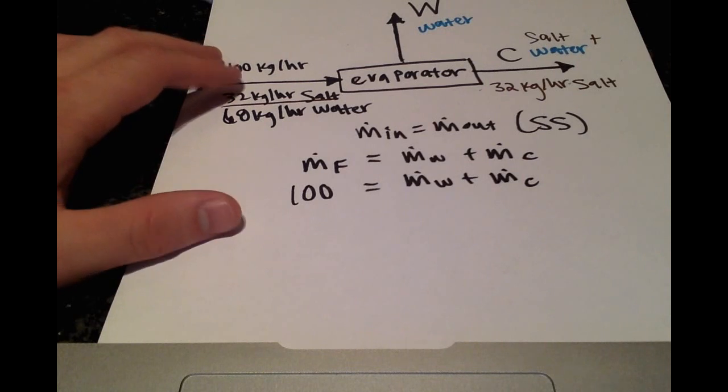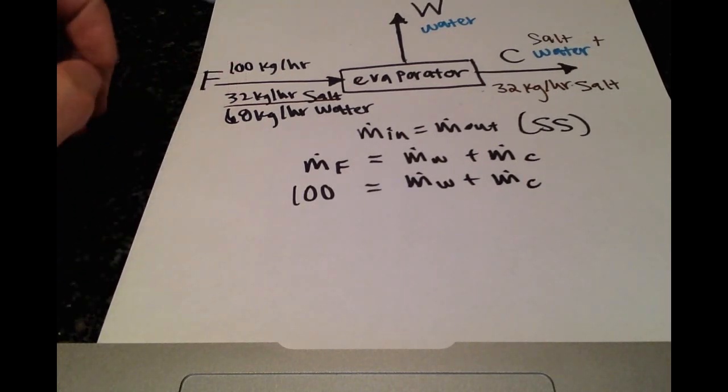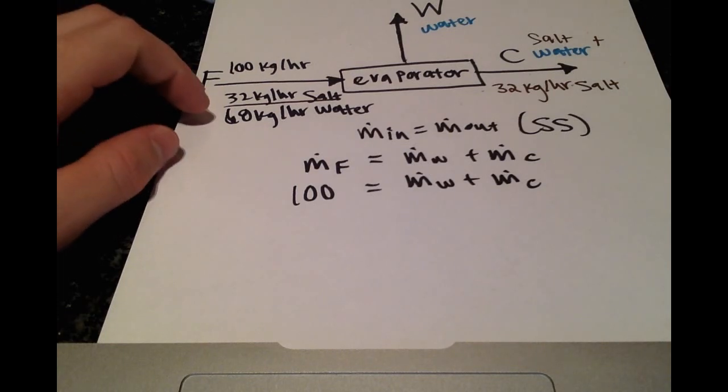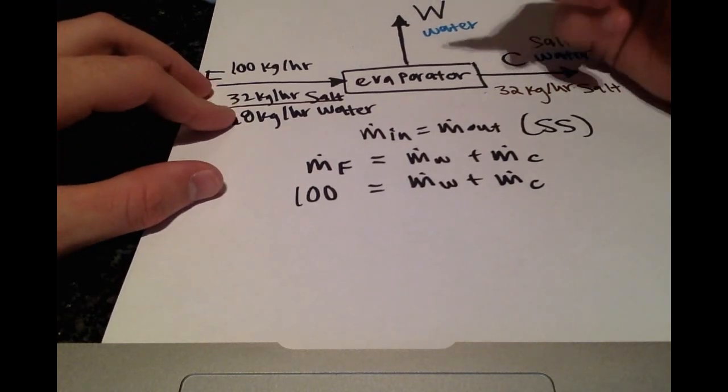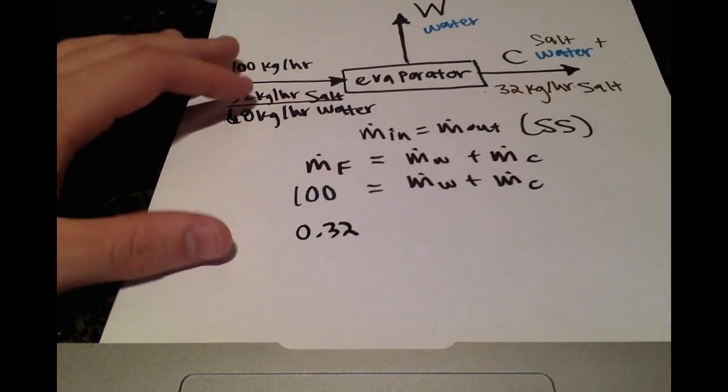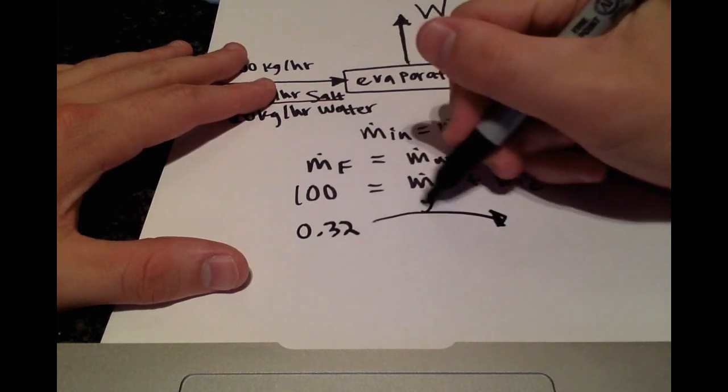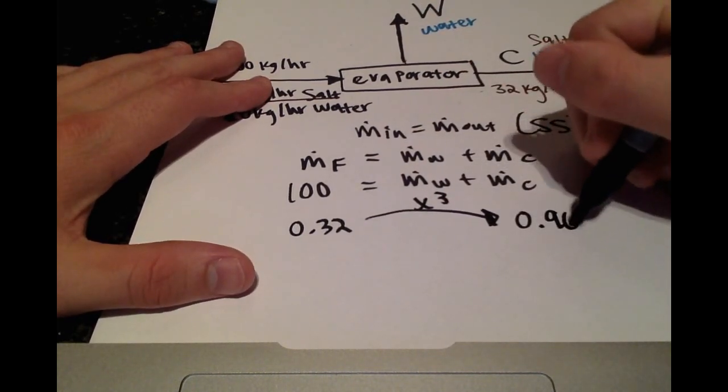So they gave us one more piece of information that we can use. They said that the weight percent of salt has tripled. So initially we have the 32 percent in the inlet stream. So going out, if we triple that, that's going to be 0.96.